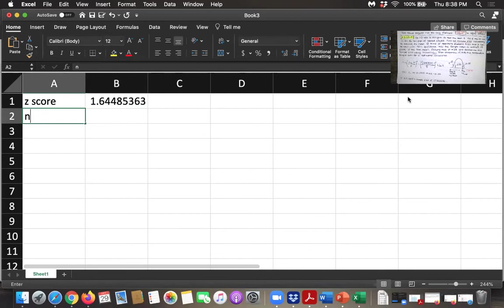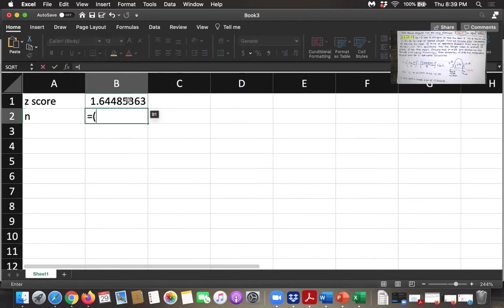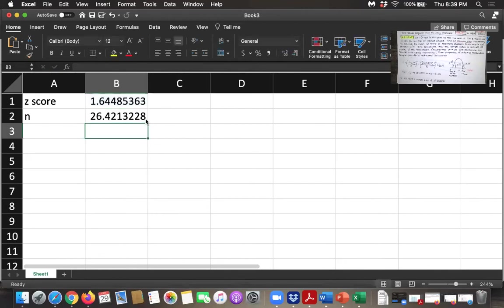The N value is equal to the Z score times that sample standard deviation of 25. You take that and divide by the error, which was 8. You want to put all of that in parentheses and then square the result. We get 26.4, which is the same thing that I got on my paper.